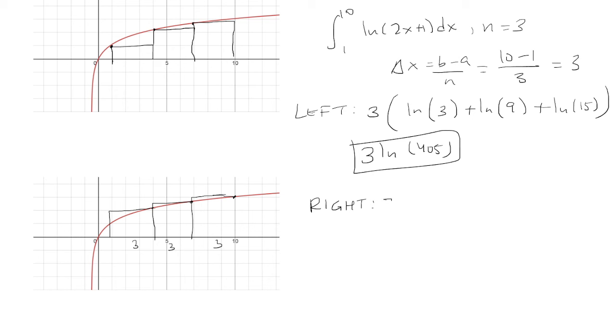So the base is 3. We can factor that out. And then we're going to start on the right here at x equals 10. So plug that in and get ln of 21. And then you go 3 across. So 10 minus 3 is 7. Plug in x equals 7. And then finally go 3 more across to get x equals 4.